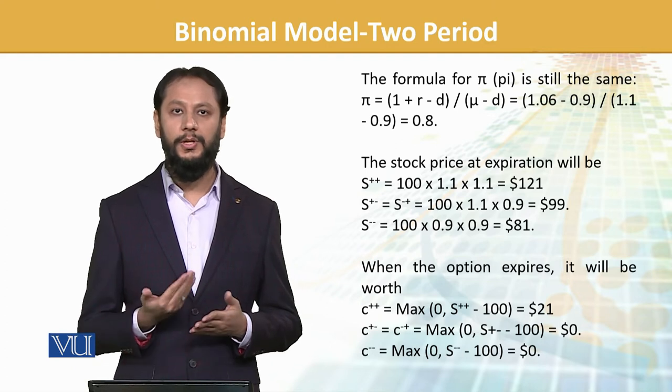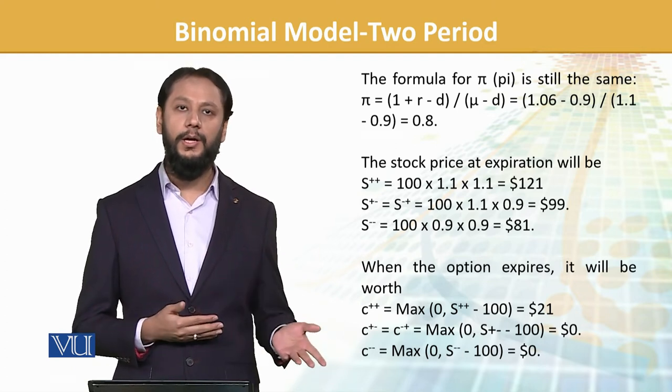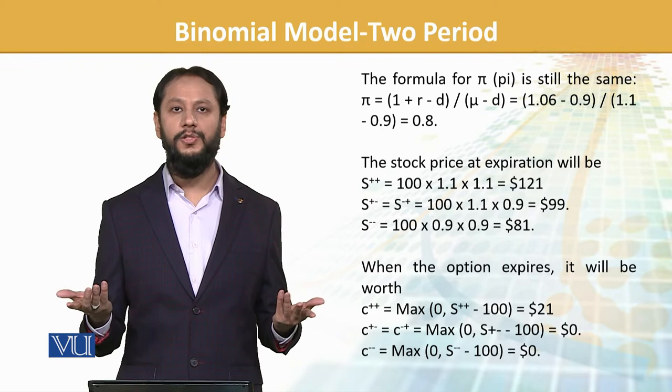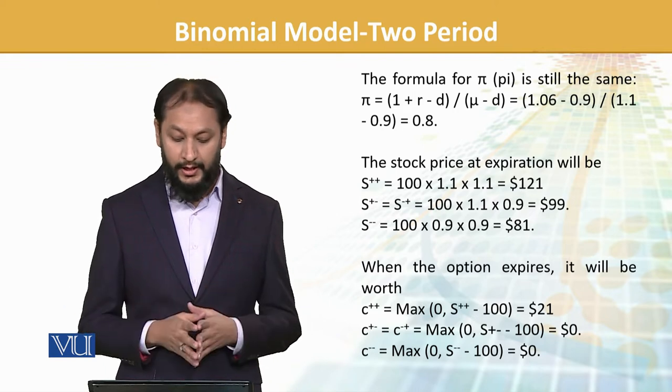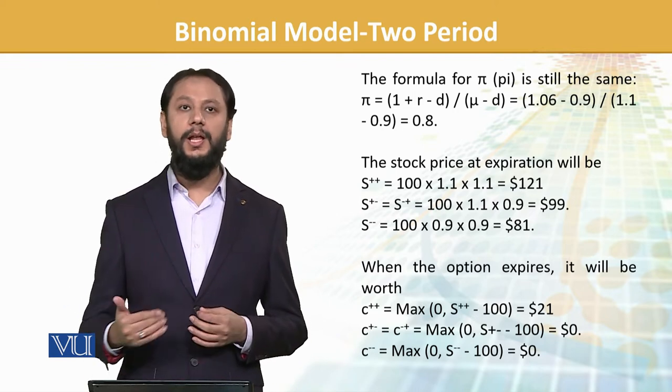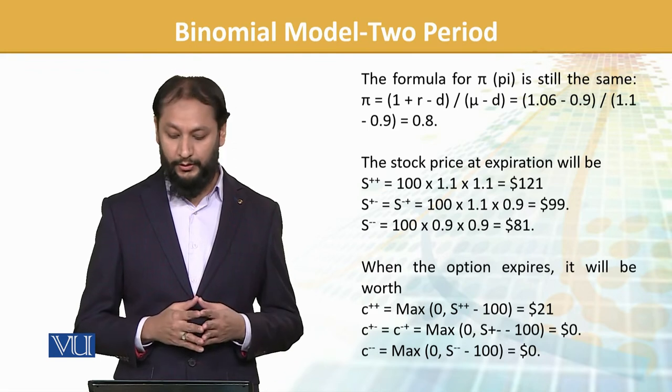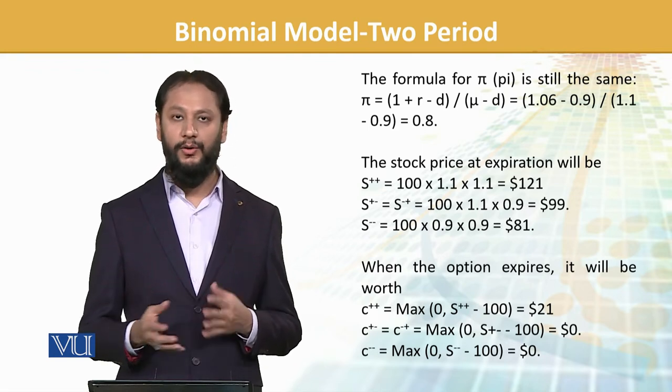In the C plus minus case, if the stock becomes $99, we will not be getting anything out of it. The call option is at $100, market value is $99, so the option is worthless. Similarly, if it goes lower, the call has no value. In only one circumstance we have a value of $21.